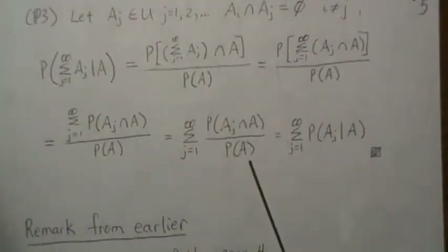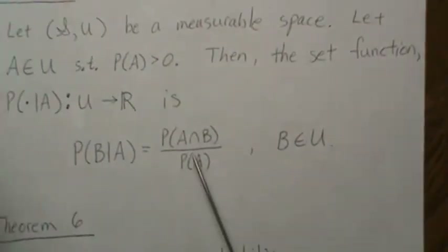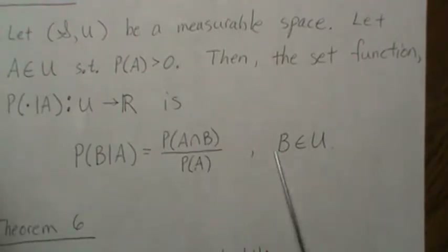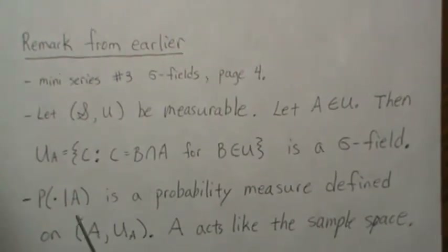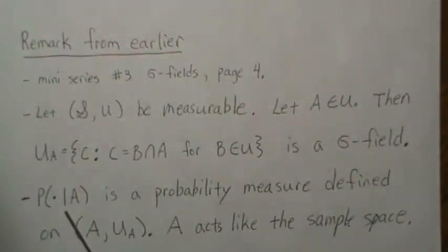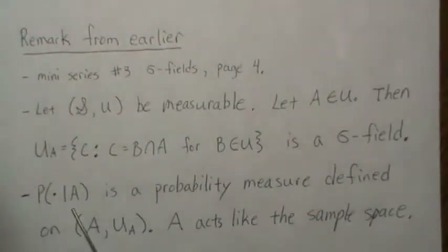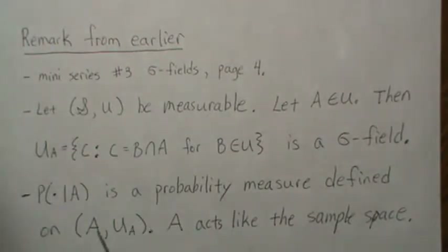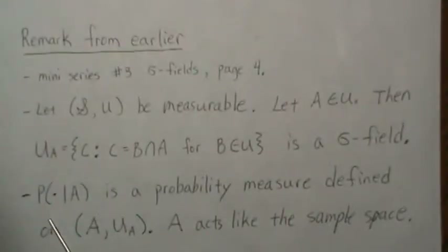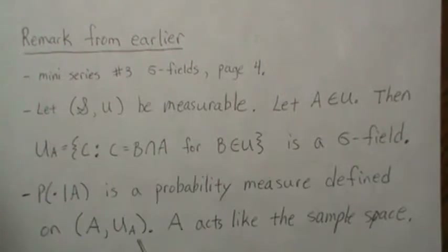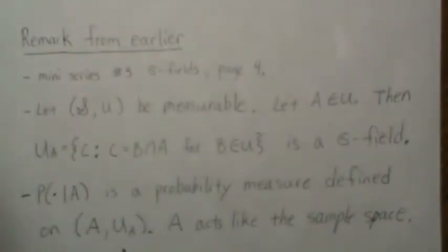Why is this relevant? Notice that in the definition of our conditional probability, we're taking intersections of all events in the sigma field with A. A probability measure needs to be defined on a measurable space. So really, this conditional probability is defined on the measurable space (A, U_A), where the event A acts as the new sample space and U_A is the sigma field associated with it.